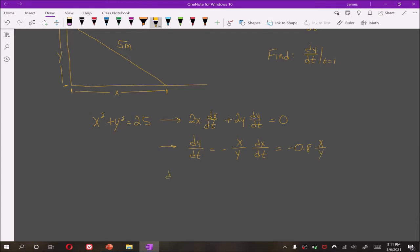So if we want dy/dt after 1 second, we'd have negative 0.8 times x(1) over y(1).